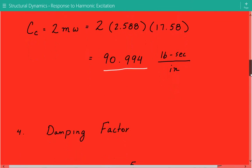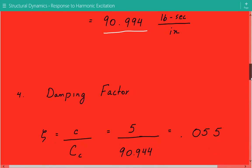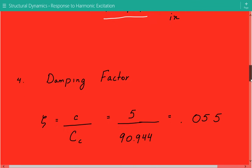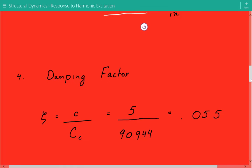Now we'll calculate the damping factor, called zeta. Zeta equals the damping coefficient divided by the critical damping constant. The damping coefficient given in the problem is 5, and the critical damping constant we just calculated is 90.944, so zeta equals 0.055.